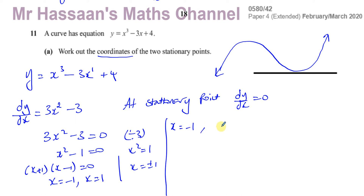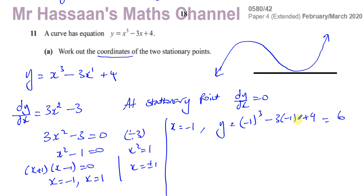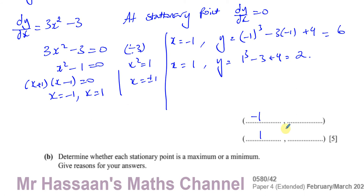We want to know what y is when x equals 1 and minus 1. When x equals minus 1, y equals minus 1 cubed minus 3 times minus 1 plus 4, which gives minus 1 plus 3 plus 4, that's 6. When x equals 1, y equals 1 cubed minus 3 plus 4, which is 1 minus 3 plus 4, that's 2. So the coordinates of the stationary points are (minus 1, 6) and (1, 2).